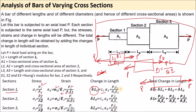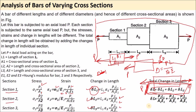Similarly, for section two: δL2 = P2·L2/(A2·E2), and for section three: δL3 = P3·L3/(A3·E3). The total change in length δL equals the summation of all three: δL1 + δL2 + δL3. In this problem the load is the same throughout, so we can factor out P.